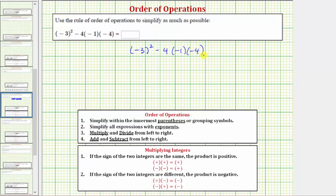The first step in the order of operations is to simplify inside the parentheses or grouping symbols, but for this expression there's nothing to simplify inside the parentheses so we move to step two where we simplify all expressions with exponents.